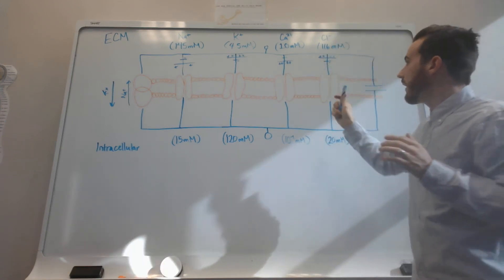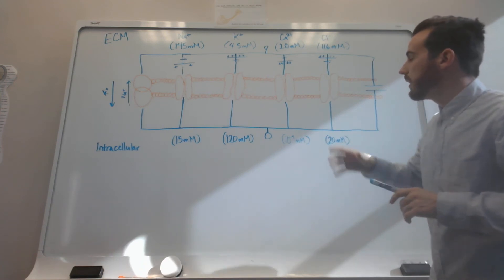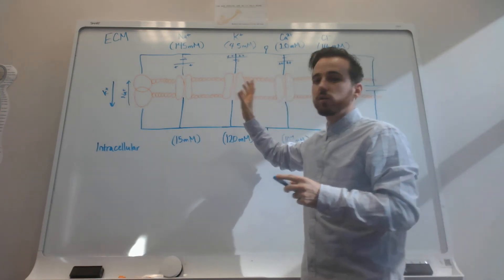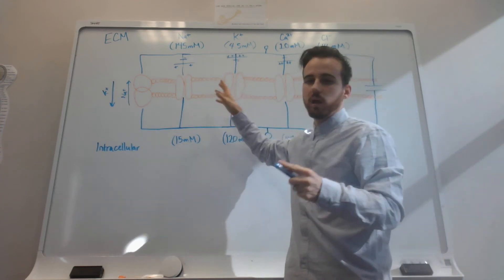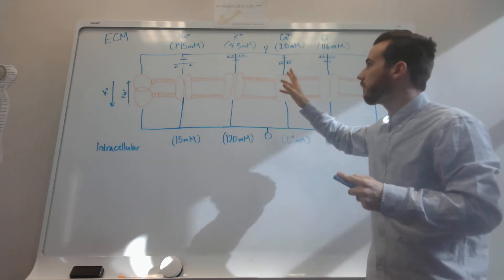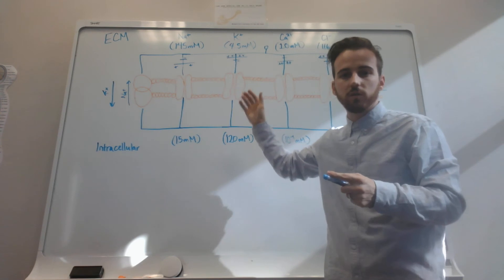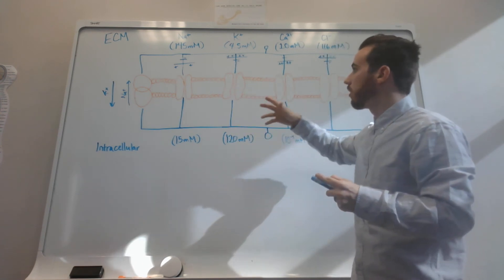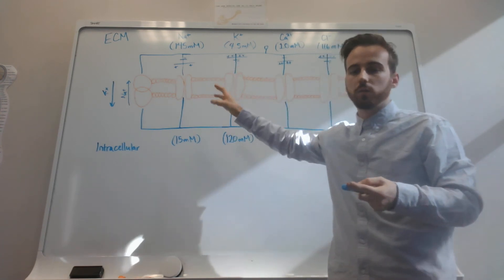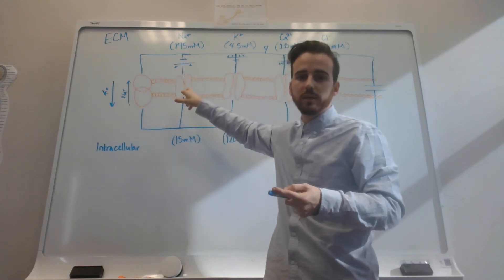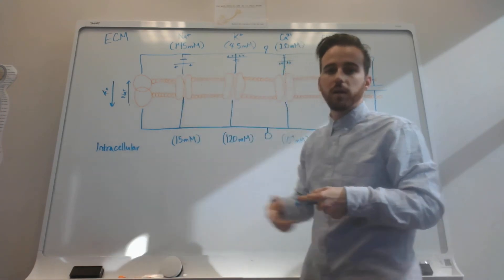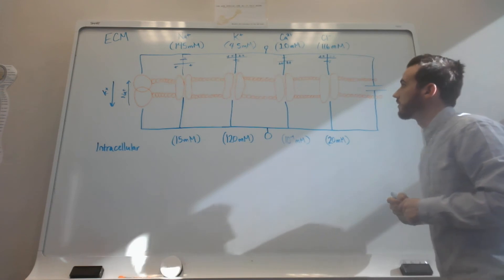So what happens? We can have really strong resistors and weaker resistors, right? If you have a weaker resistor, more charge is going to be getting through. If you have a stronger resistor, or in other words, if the channel is more likely to be closed, then you're going to get less of the ions moving across the membrane.